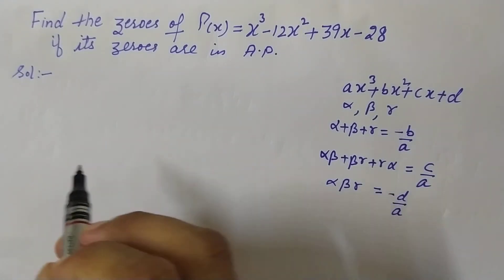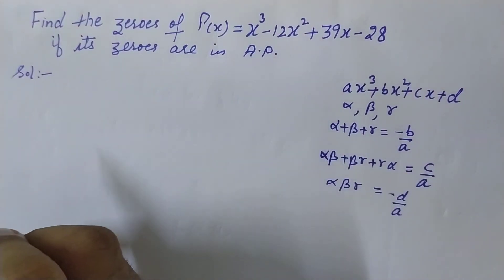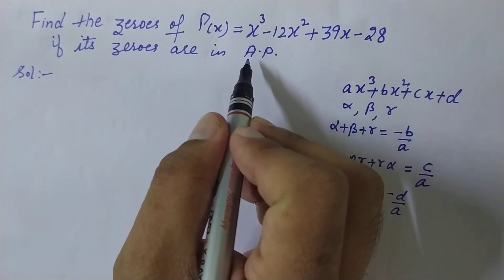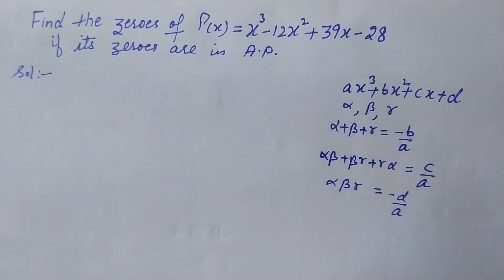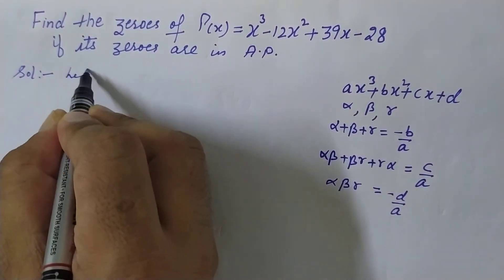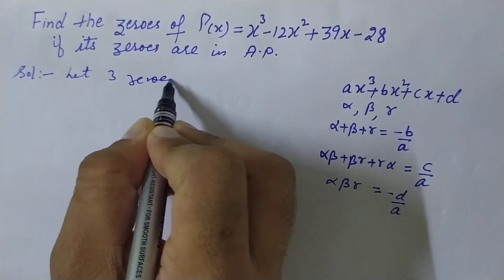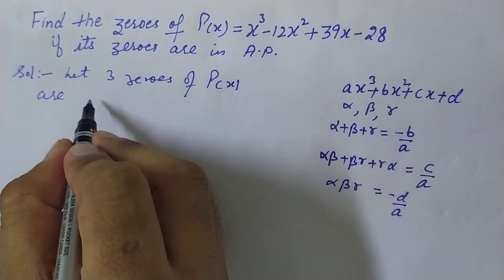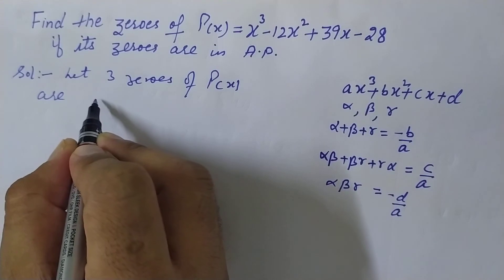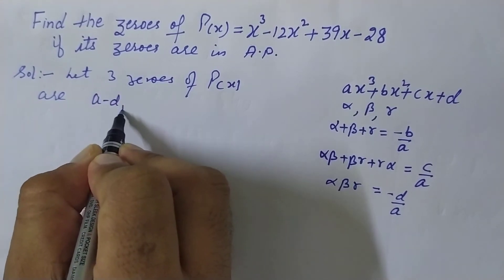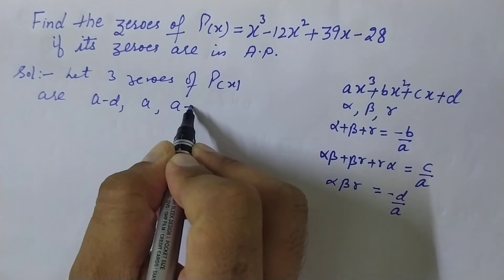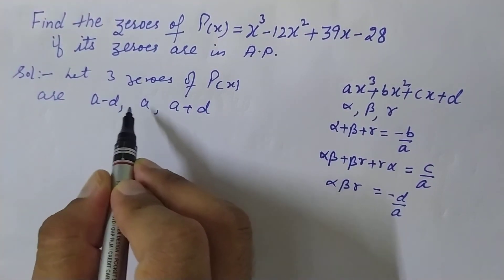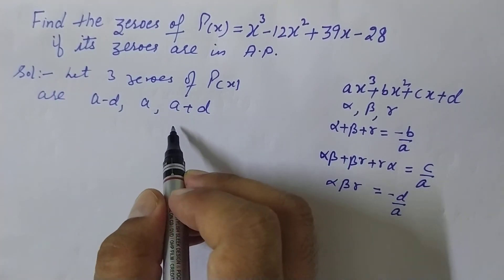One more thing: its zeros are given in AP. So we have a polynomial whose zeros are in AP. We will have three numbers which will be in AP. Let three zeros of the given polynomial P(x) be, because these are in AP, we are always considering three terms in AP as a-d, a, and a+d. Here a is the first term and d is the common difference.